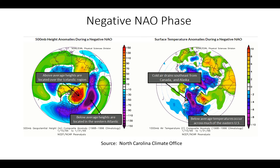With a negative NAO phase, things flip-flop. The pattern switches. What you have with a negative phase NAO at 500 millibar height anomalies is anomalous troughing, generally stretching across just south of an anomalous blocking pattern — the upper-level ridge with higher-than-normal heights across Greenland and the Icelandic region. And below that, generally across the middle latitudes, you get below-normal heights — troughing conditions across the middle latitudes of the United States, across the Atlantic, and into parts of Europe with a negative NAO.